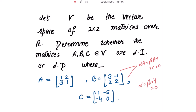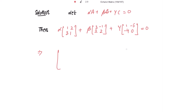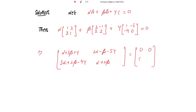That is the condition for linear independency. So let αA + βB + γC = 0. Writing out matrix A plus beta times matrix B plus gamma times matrix C, and on adding these matrices we get: first row elements are alpha plus 3 beta plus gamma, and 2 alpha minus beta minus 5 gamma; second row elements are 3 alpha plus 2 beta minus 4 gamma, and alpha plus 2 beta. This equals the 2 by 2 zero matrix.